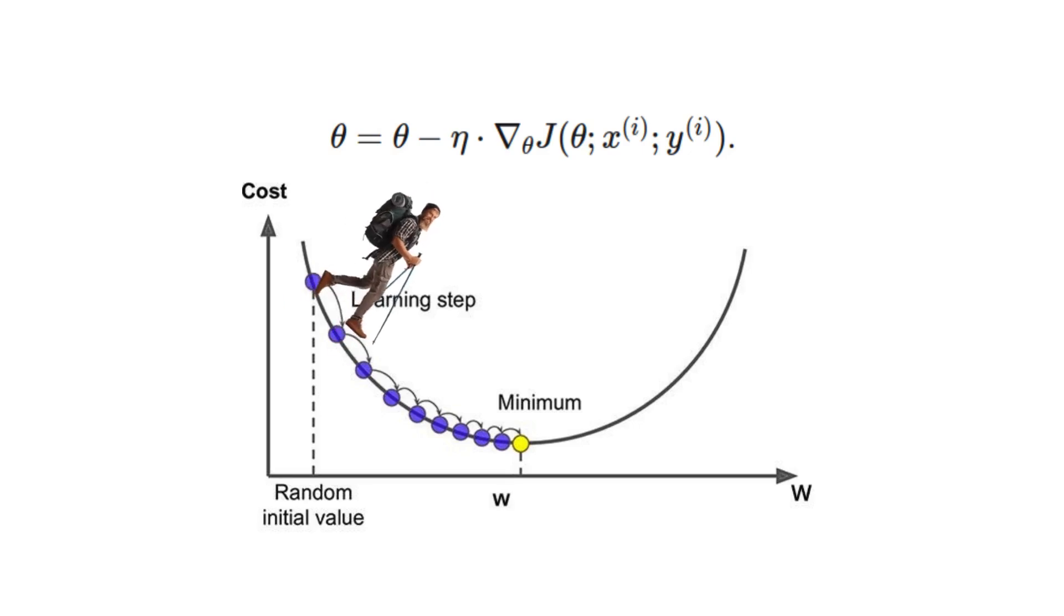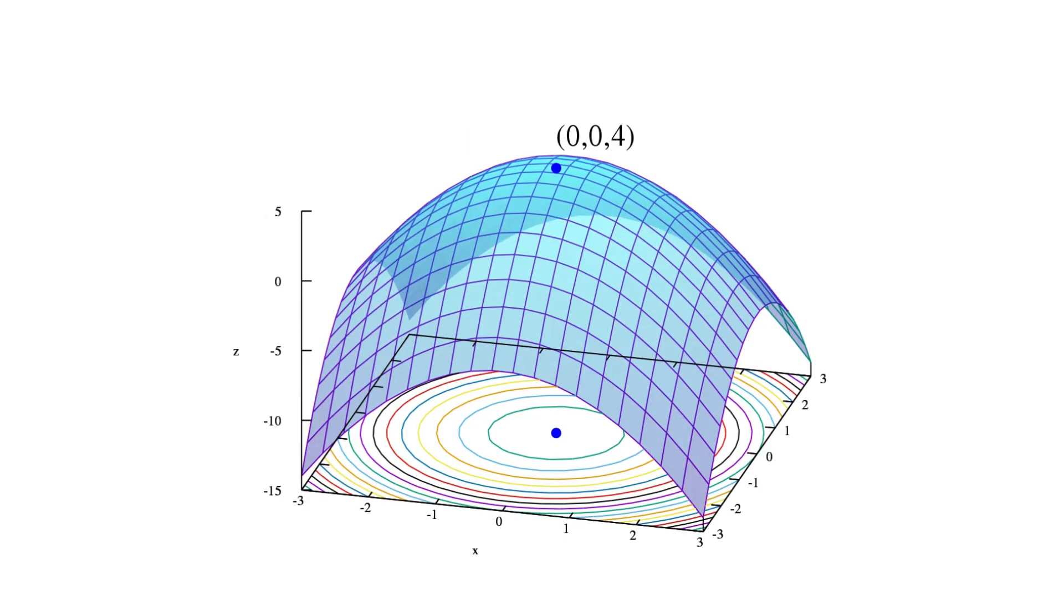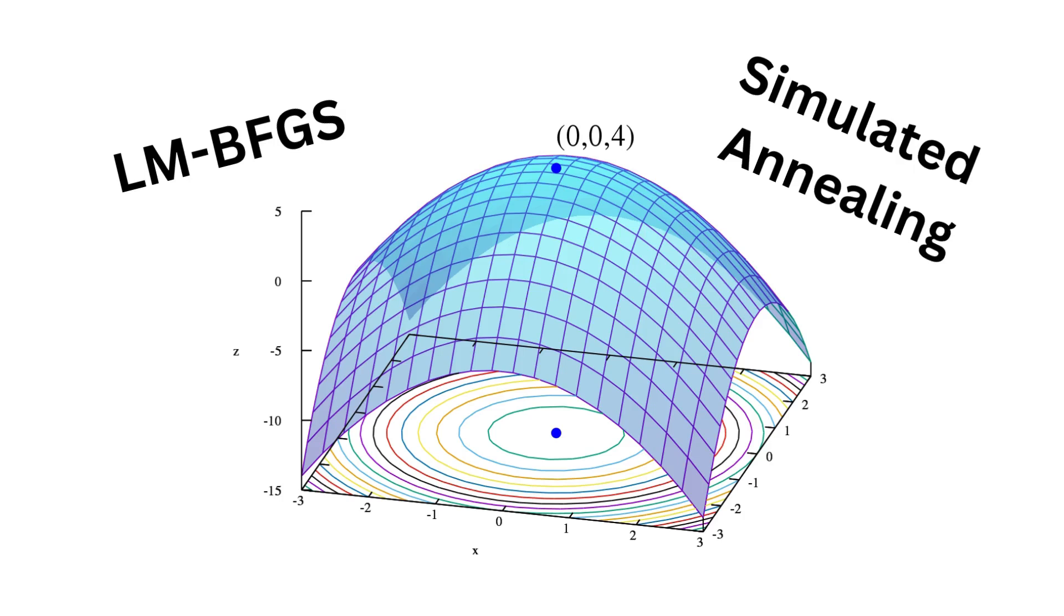You can think of gradient descent as hiking down an error plane. There are other kinds of optimizers that are useful in different contexts in machine learning, like limited memory BFGS or simulated annealing.